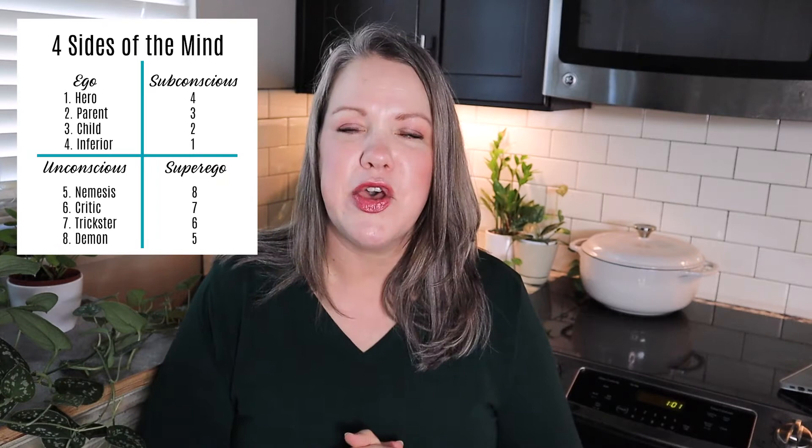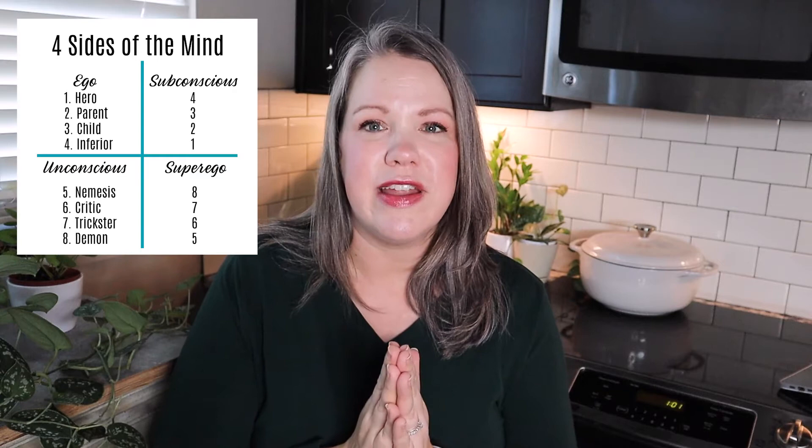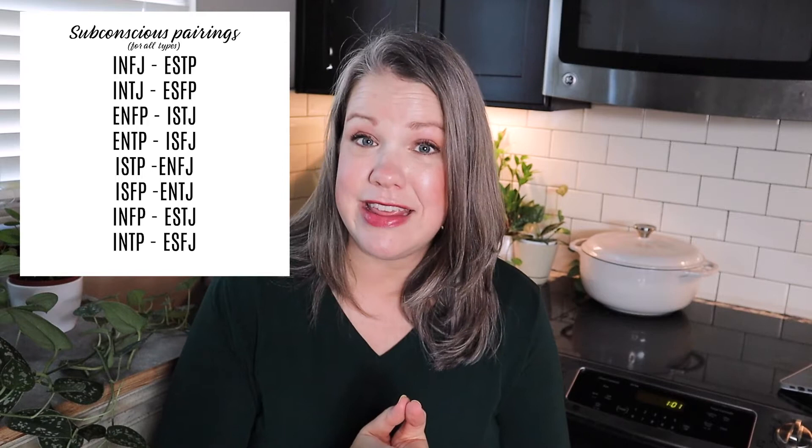When we find ourselves in a situation where our fourth function is the key to solving a problem, we need to turn this part of ourselves up — bring it from the bottom of the stack to the top. In this scenario, turning up our inferior function transitions it into a hero function, turning us into the personality type that flips those four functions upside down. I'm an INFJ, so I'll use the INFJ type as an example. The INFJ subconscious is an ESTP — the order of functions is four, three, two, one.